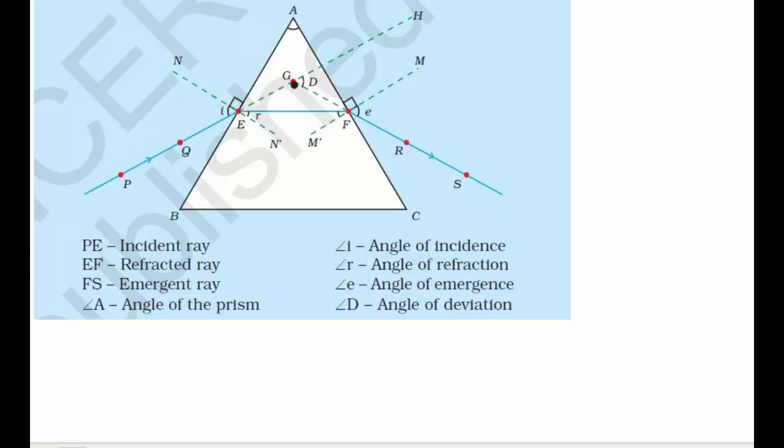to here and when we extend this incident ray, we find that this emergent ray basically bends at an angle to the direction of the incident ray. That means it has bent at an angle